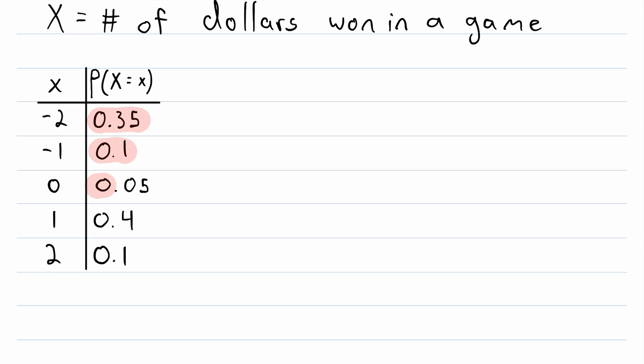And in the second column, we have the probability that the random variable takes on each of these values. The probability of losing two dollars is 0.35, the probability of winning one dollar is 0.4, and so on.